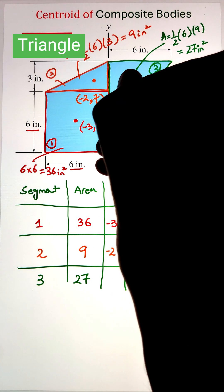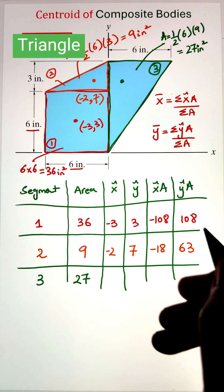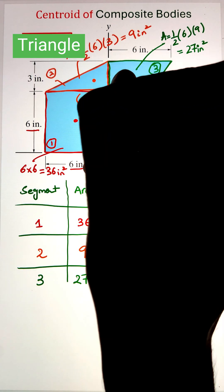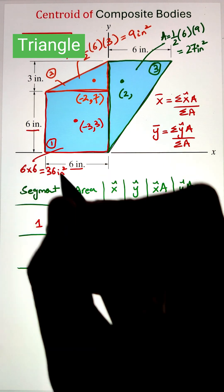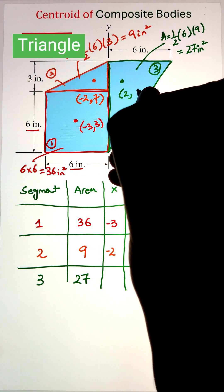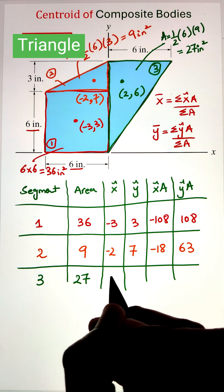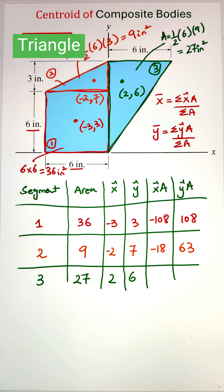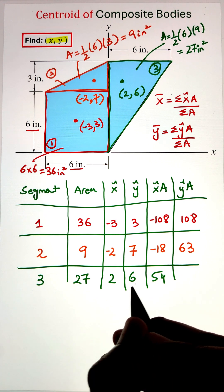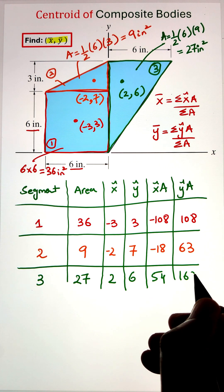The location of the centroid for that right angle triangle is at a coordinate of 2 inches along the x direction, whereas it is two-thirds of 9 inches, which was our height. So two-thirds of 9 inches will be 6. Once we have the centroid, we can multiply it with the area to get our values of x'A and y'A, which are 54 and 162 respectively.